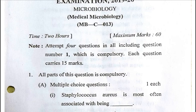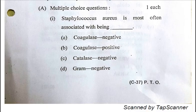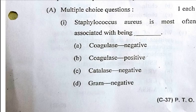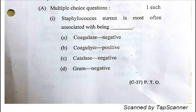Part one says: Staphylococcus aureus is most often associated with being — A) coagulase negative, B) coagulase positive, C) catalase negative, D) gram negative. The correct option is B, which is coagulase positive. Staphylococcus aureus is the species which is coagulase positive. There are other species of Staphylococcus, like S. epidermidis, which is coagulase negative.